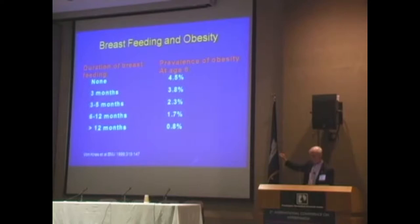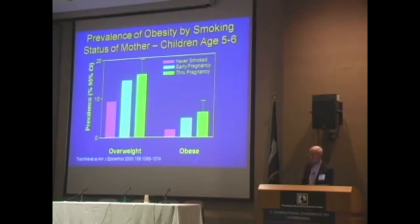Maternal smoking is important and it manifests itself out into the early adult life. If a mother smoked during pregnancy, that child is at greater risk for obesity than if they did not. Even if they stopped after the first trimester — which is the blue bar in the middle — they still had most of this impact present.